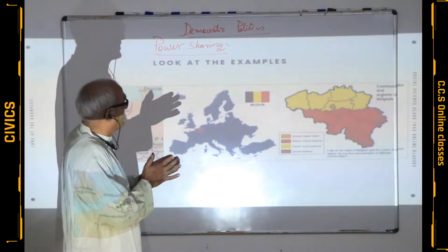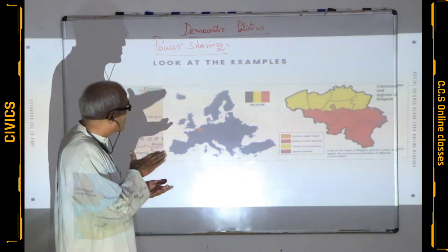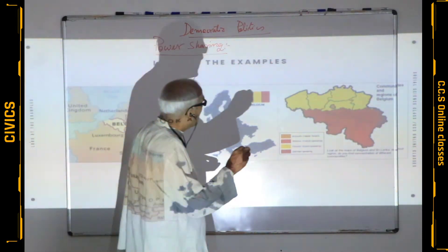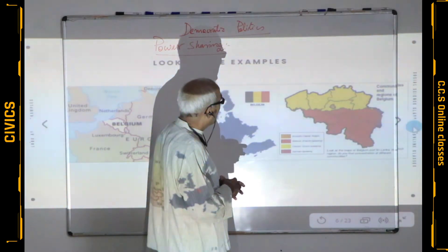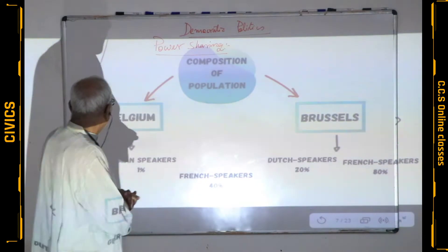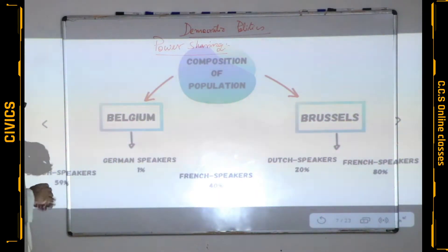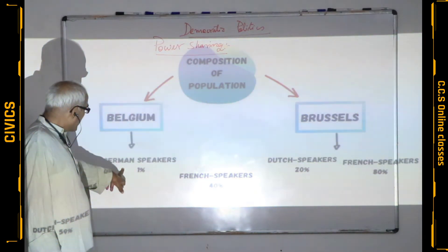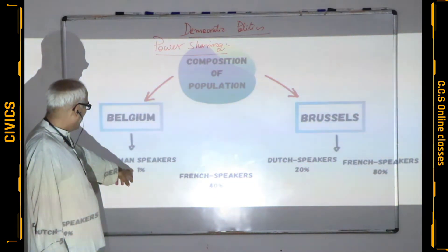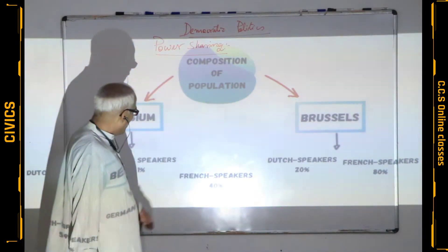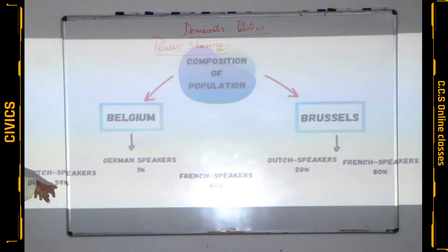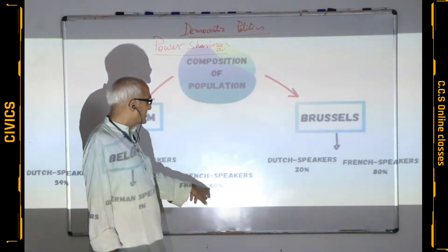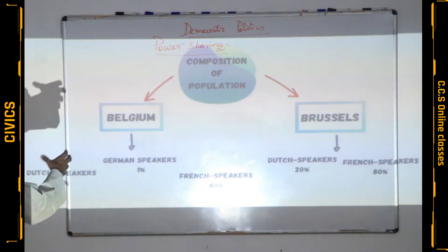As we know that in every country, maybe small, maybe large, social diversity is an important feature. Now let us see the social diversity of Belgium. At the linguistic level: Dutch speaking 59%, French speaking 40%, and German speaking 1%. So this is the linguistic diversity in this country.